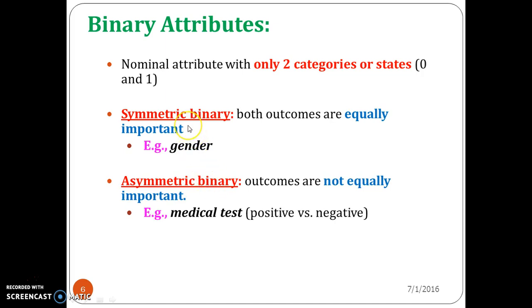An attribute is called a symmetric binary attribute when 0 and 1 are the two outcomes and both outcomes are equally important. If they are not equally important and it is skewed toward any one of the outcomes alone, then it is an asymmetric attribute.